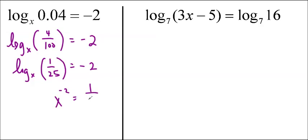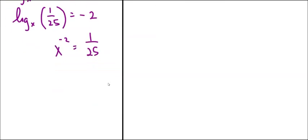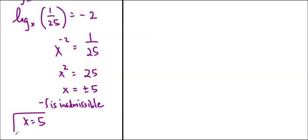So x to the negative 2 is 1 over 25. If I want to get rid of that negative, then x squared will be equal to the reciprocal of this, so 25. And that tells us that x is actually equal to plus minus 5. However, the negative 5 is inadmissible because it was a base in our log originally, so x is equal to 5 is the solution.